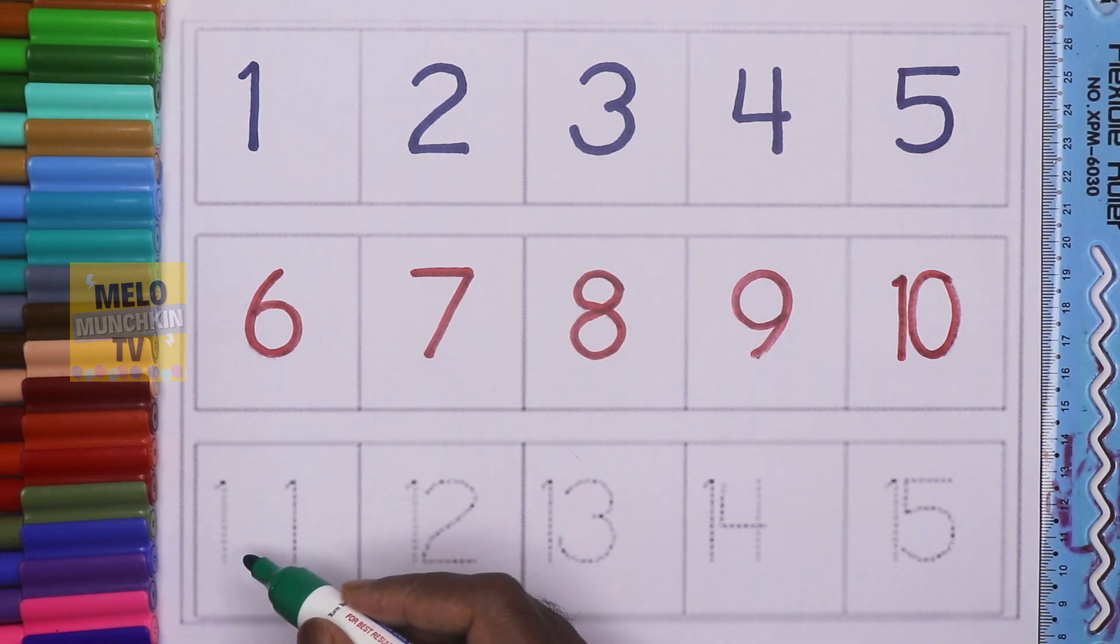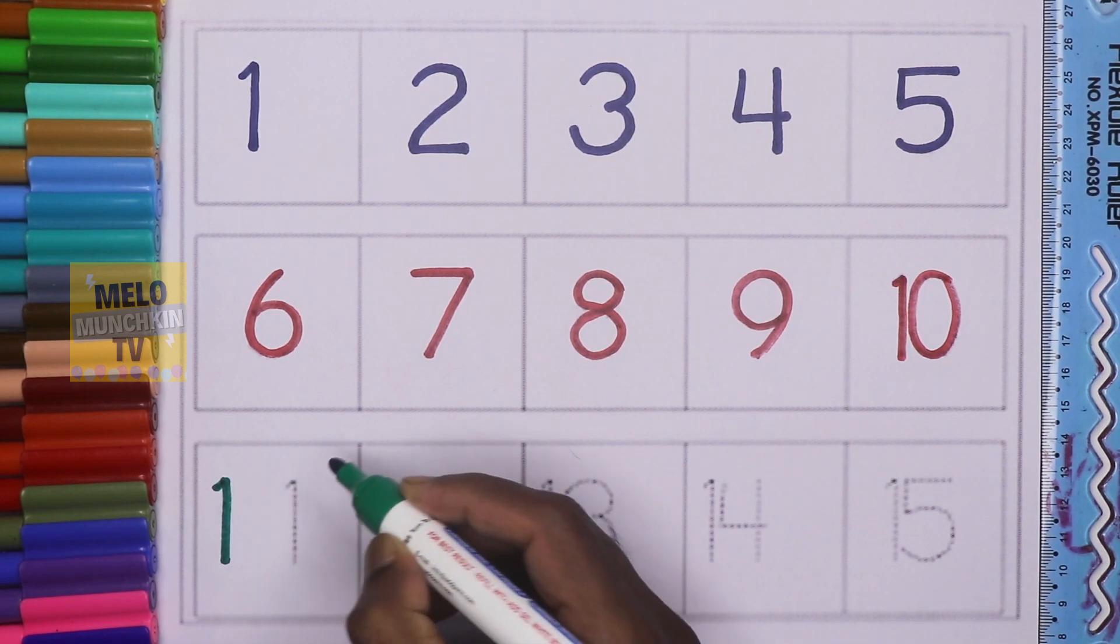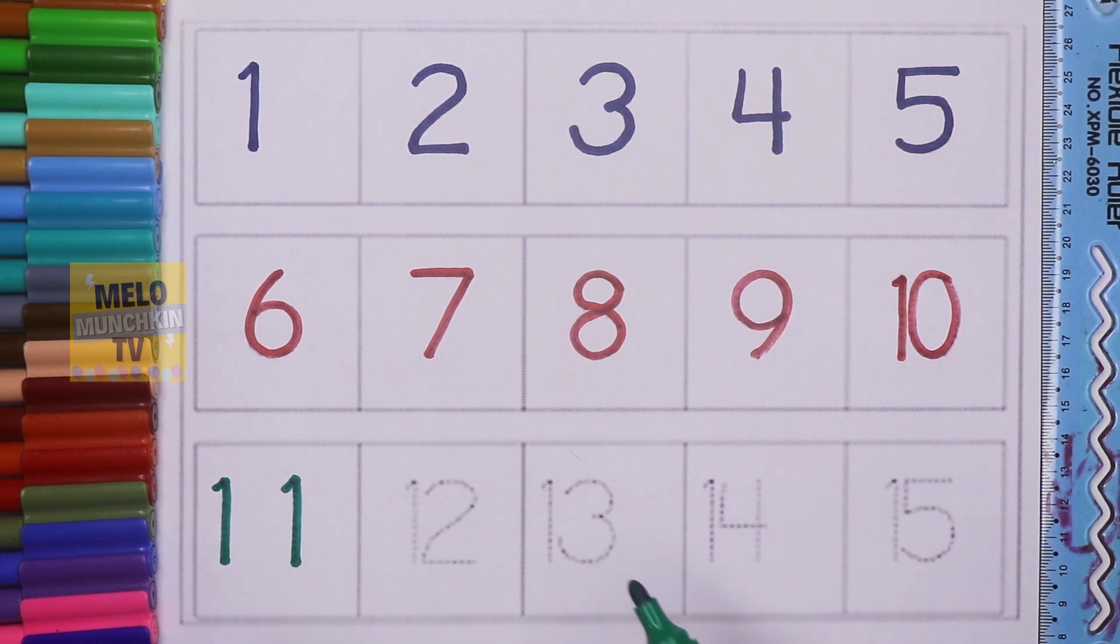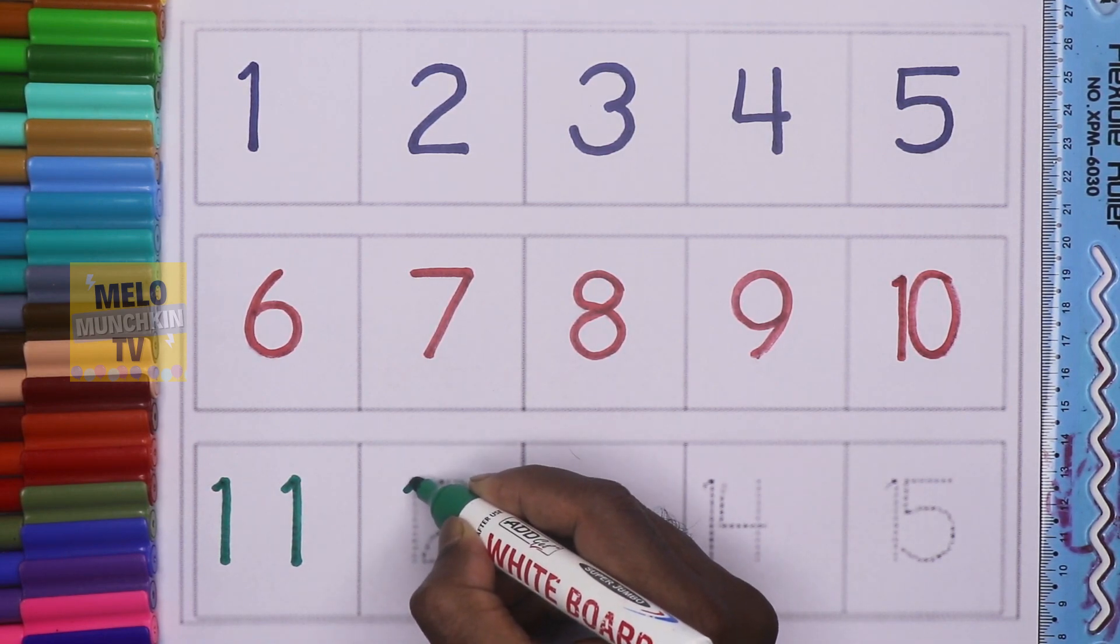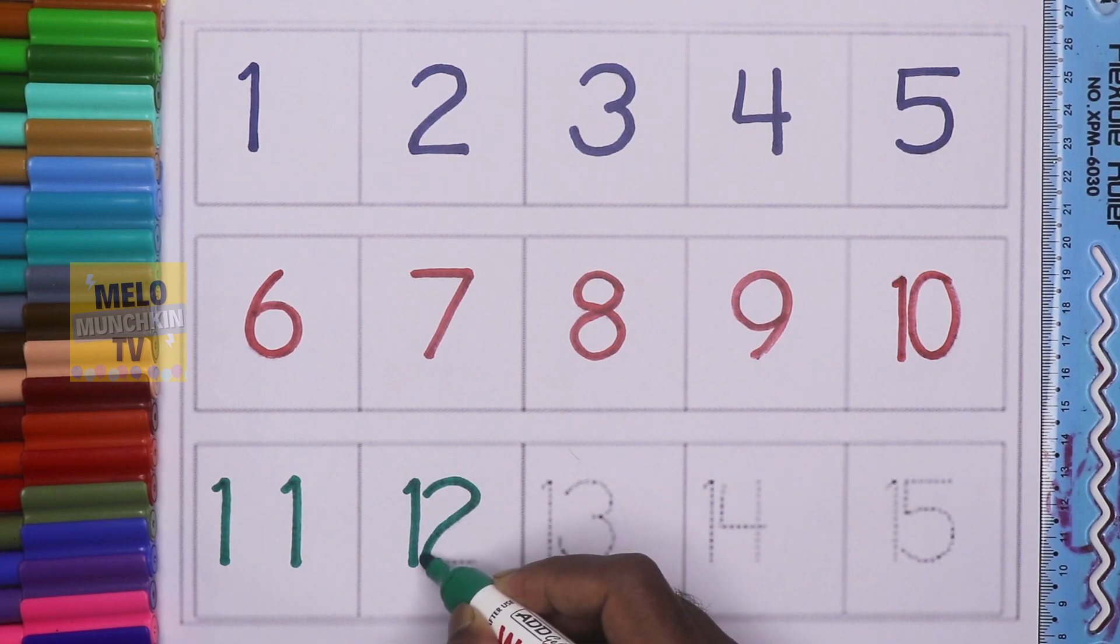This is 11, 1-1, 11, E-L-E-V-E-N, 11, E-L-E-V-E-N, 11. This is 12, 1-2, 12, T-W-E-L-V-E, 12, 12, T-W-E-L-V-E, 12.